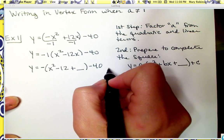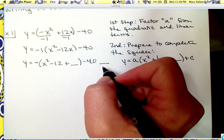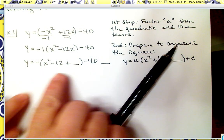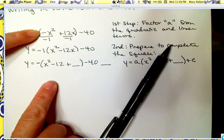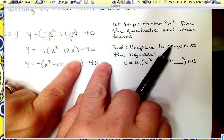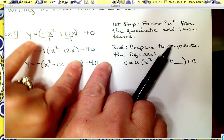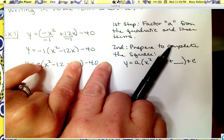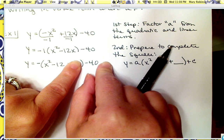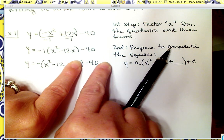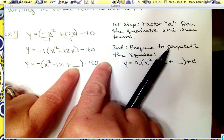Let me explain the sign. Up to now everything is the same as what we started with. If I ignore the blanks and distribute this negative, I would have negative x squared, and negative times negative 12 is positive 12x, and a negative 40. So right now I've still got exactly what we started with. But when we add this number in, we need to pay attention.